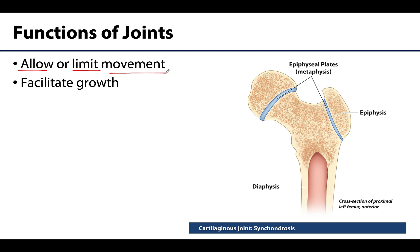Now, probably less intuitive is that certain joints can actually facilitate growth. In particular, synchondroses that involve epiphyseal plates, which are located in certain metaphyses of growing bones, are actually examples of joints. You have two bony parts meeting up with an intermediate portion of connective tissue — in this case, hyaline cartilage. If you've forgotten what an epiphyseal plate is, make sure to review the bone formation video or the long bone video. We will also review the term synchondrosis in upcoming joint videos when discussing the types of cartilaginous joints.